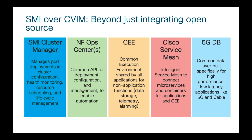Cisco Subscriber Microservices Infrastructure, or SMI, is made of five pillars. The first is the SMI Cluster Manager, which is responsible for managing pod deployments in the cluster, configuration, health monitoring, resource scheduling, and lifecycle management. The second is the Op Center for all network functions, which provides a common API for deployment, configuration, and management to enable automation.